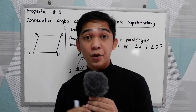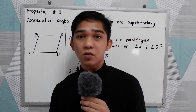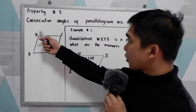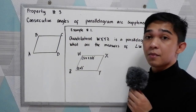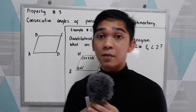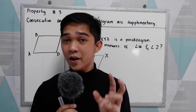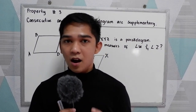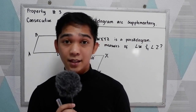Now let's have our third property of a parallelogram: consecutive angles of a parallelogram are supplementary. When we say supplementary, the two angles in a pair sum to 180 degrees.